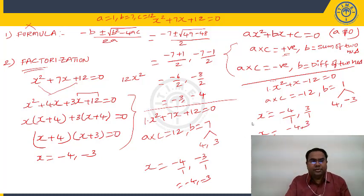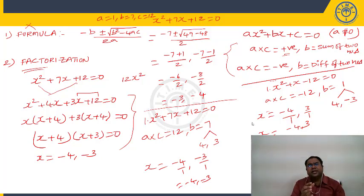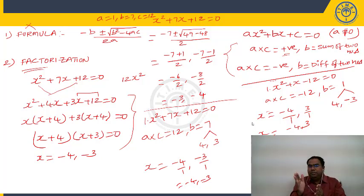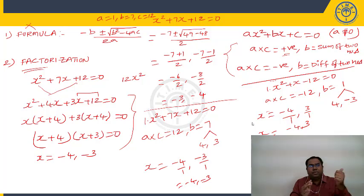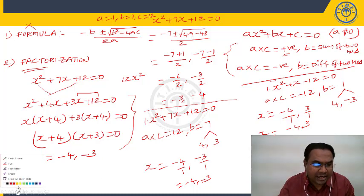So to summarize: multiply the constant term and X² term. If A×C is positive, write B as the sum of two numbers with that sum equal to B and product equal to A×C. If A×C is negative, write B as the difference of two numbers with difference equal to B and product equal to A×C. This shortcut avoids the full factorization method.